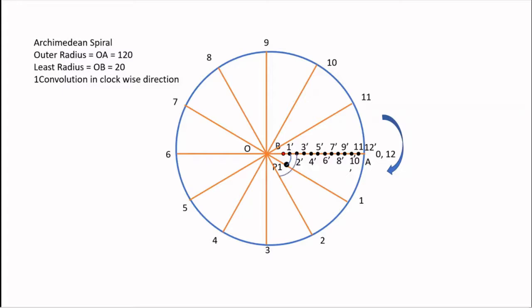Similarly, with pole O as the center and radius O to 2 dash I will be drawing an arc and finding the intersection with the position 2 and this is point P2. For the remaining points, I will be doing the same and I will be getting point P3, P4, P5, P6, P7, P8, P9, P10, P11 and 12. Twelfth point lies on A itself, point A itself.